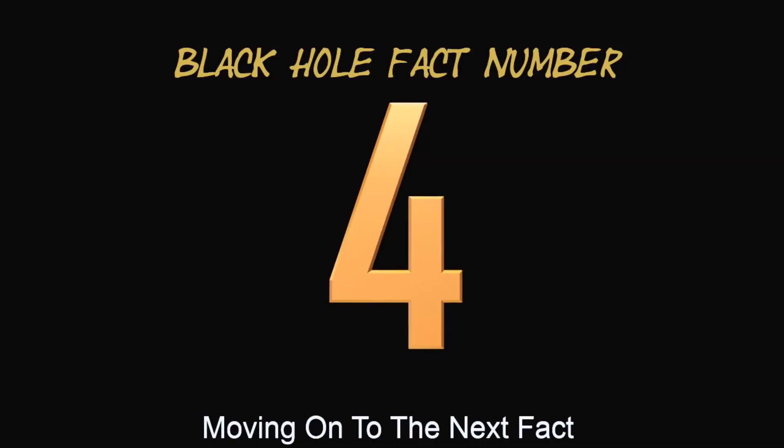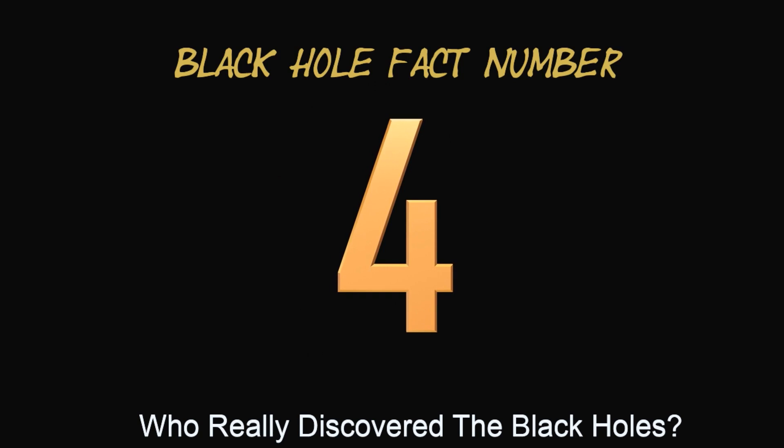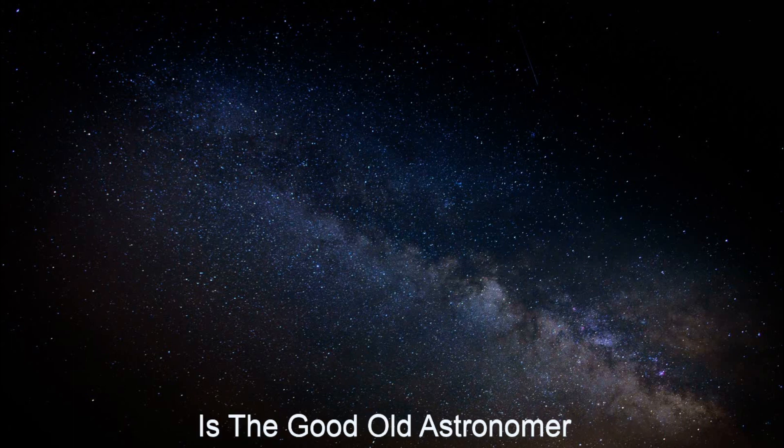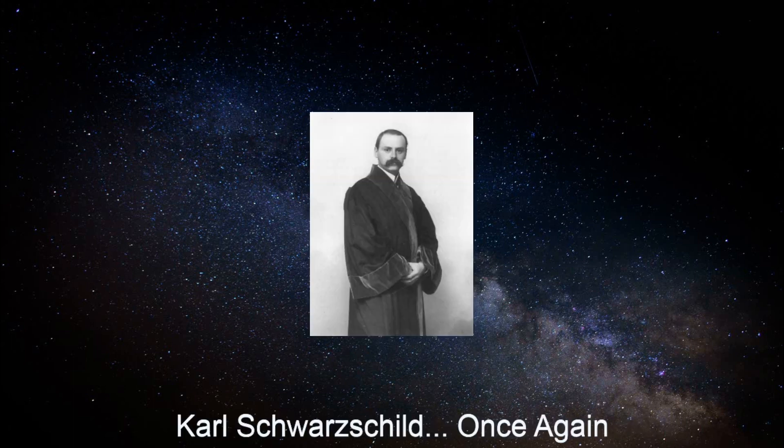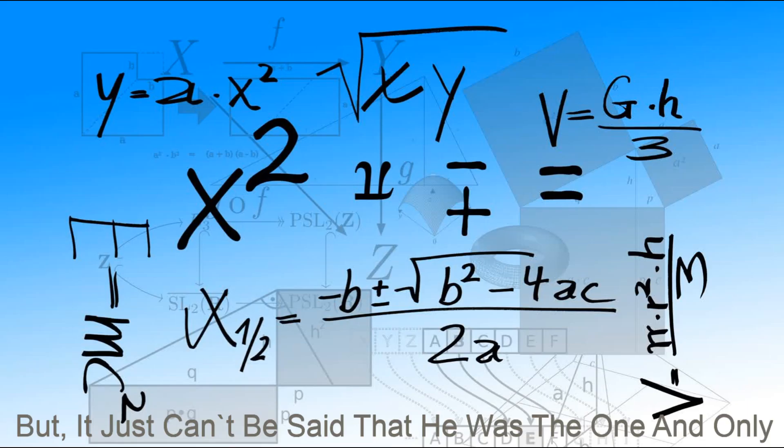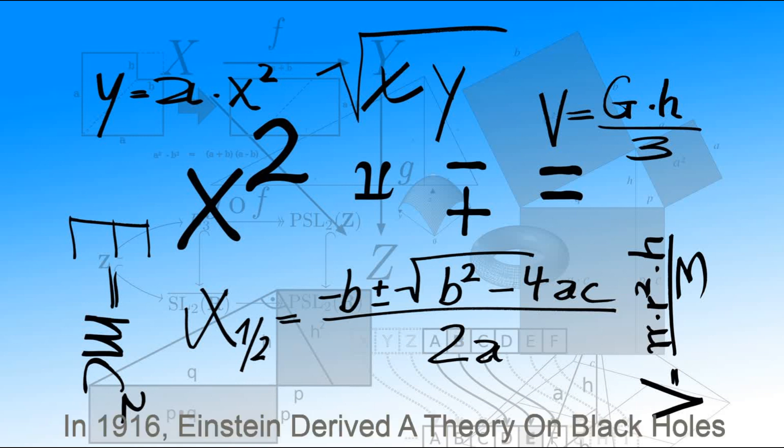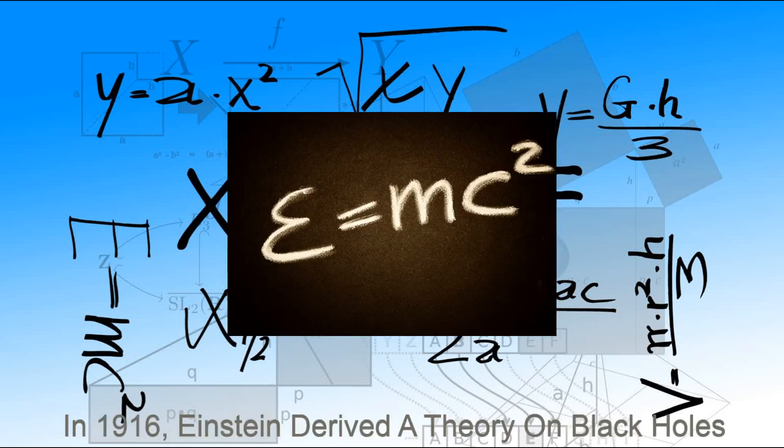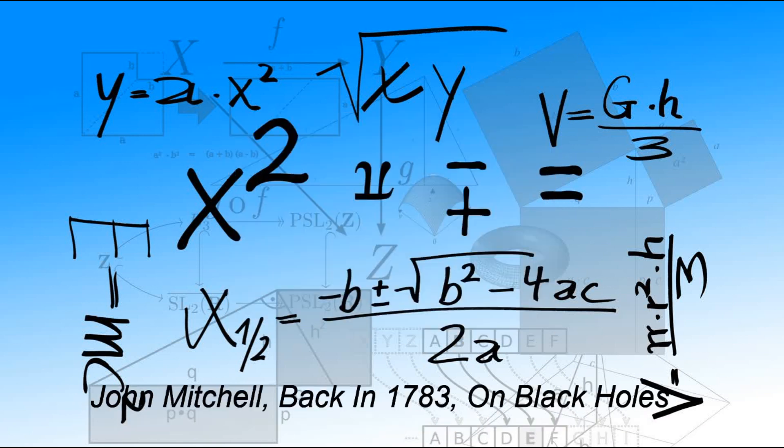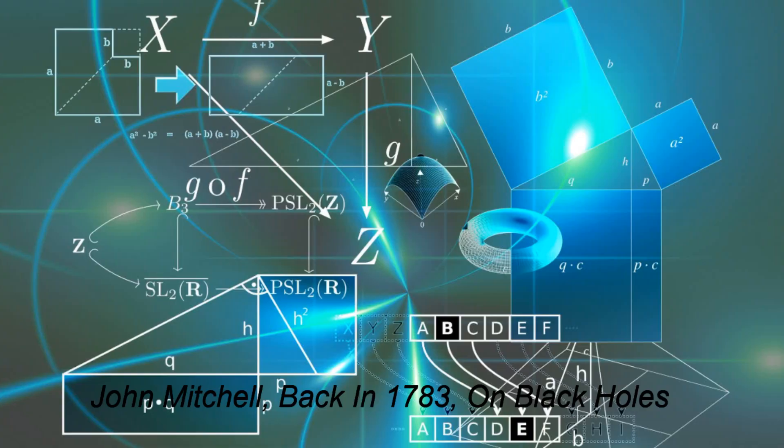Moving on to the next fact: who really discovered the black holes? The straightforward answer to this question is the good old astronomer Carl Schwarzschild, once again. But it just can't be said that he was the one and only. In 1916, Einstein devised a theory on black holes inspired by a theory of a British physicist John Mitchell back in 1783 on black holes.